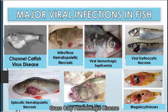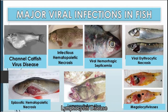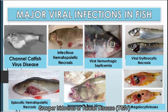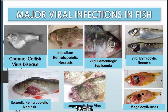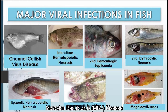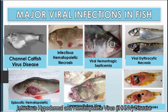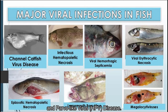Other major fish viral diseases include grouper iridovirus of Taiwan disease and sleepy grouper disease. In penaeid shrimps, major viral diseases include: white spot syndrome disease (WSSV), yellow head virus (YHV) disease, monodon baculovirus (MBV) disease, infectious hypodermal and hematopoietic necrosis virus (IHHNV) disease, and hepatopancreatic parvovirus-like virus (HPV) disease.